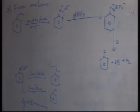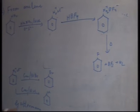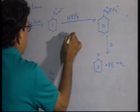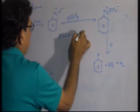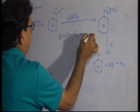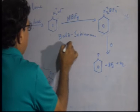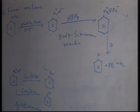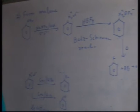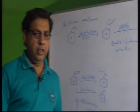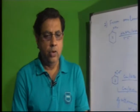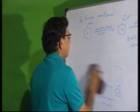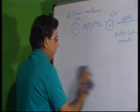This is the only method for introducing a fluorine atom into a benzene ring — otherwise we cannot do direct fluorination. This reaction is known as the Balz-Schiemann reaction (S-C-H-I-E-M-A-N-N). So haloarenes can be prepared by halogenation, or from aniline via the Sandmeyer reaction, Gattermann reaction, or Balz-Schiemann reaction.